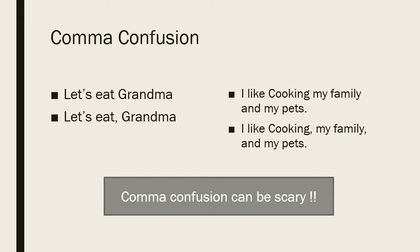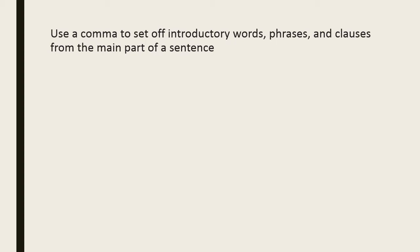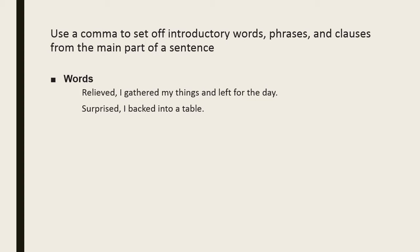The basic use of a comma is to set off introductory phrases, words, and clauses from the main part of a sentence. Commas are generally used to separate the introductory words of a sentence. For example: 'Surprised, I backed into a table' and 'Relieved, I gathered my things and left for the day.' The initial words 'relieved' and 'surprised' are separated by commas because they are introductory words, separate from the main part of the sentence.